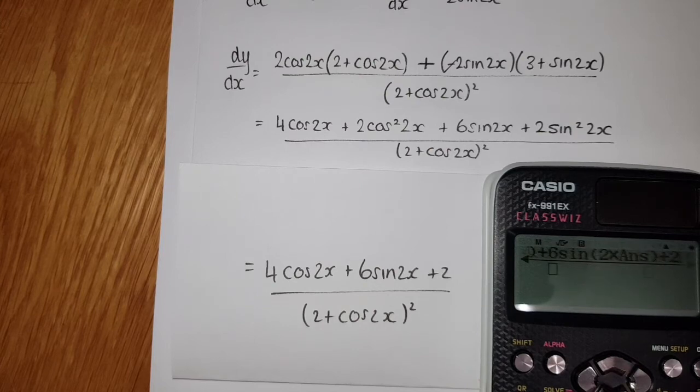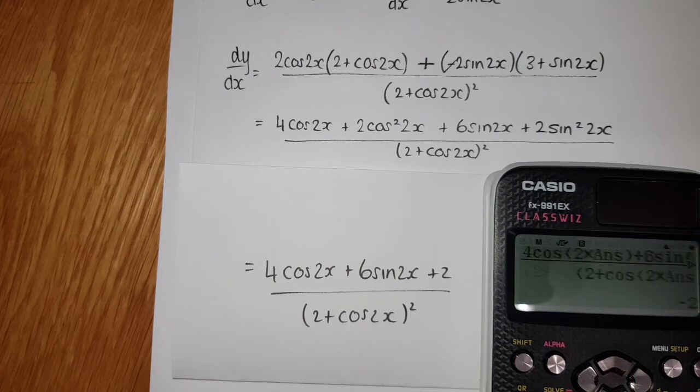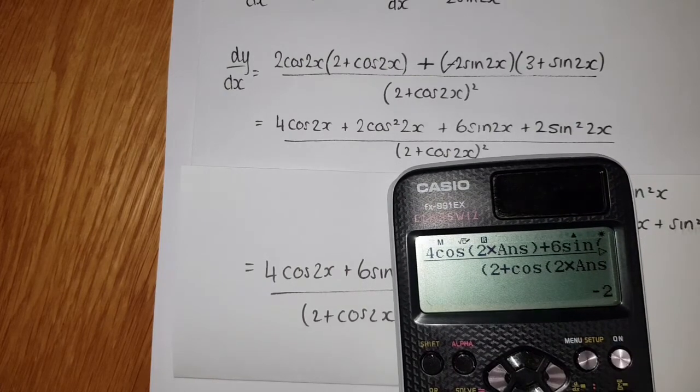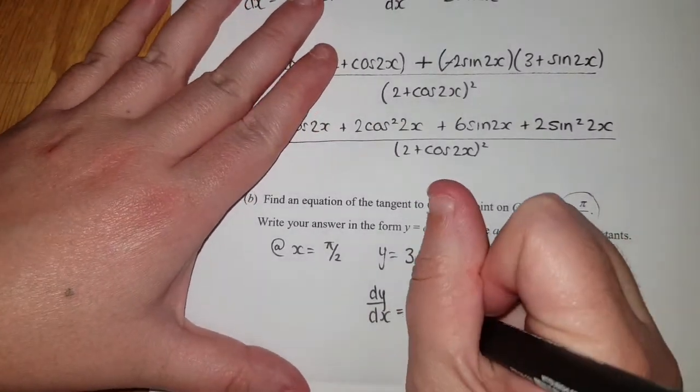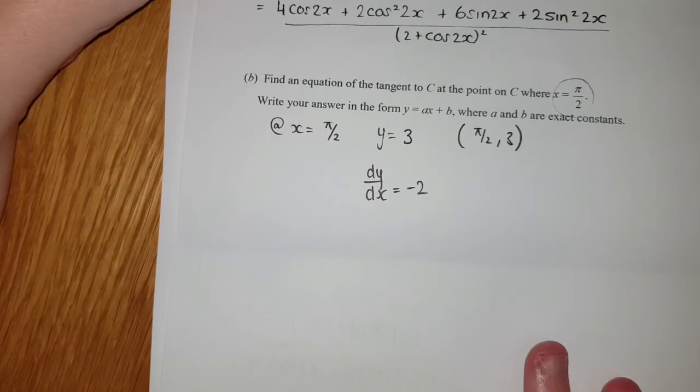And on the bottom we've got 2 + cos(2 times the answer), and then the whole thing squared. This gives us minus 2. I'd always recommend typing it in a couple of times just in case you get it wrong.